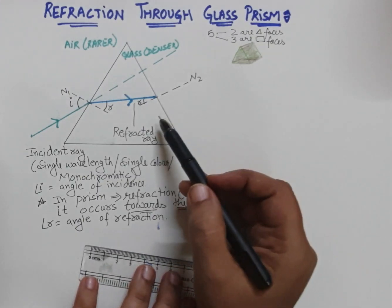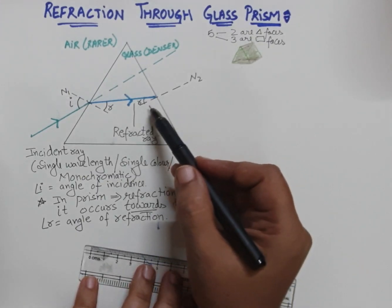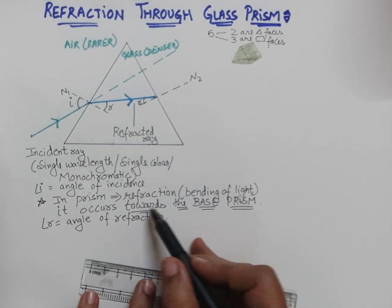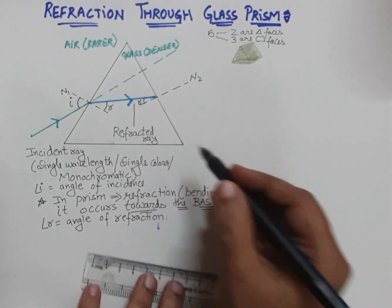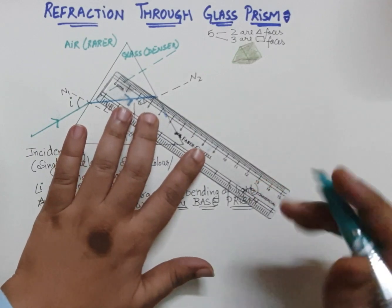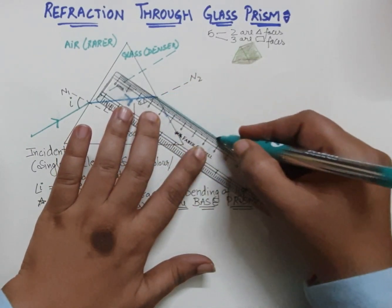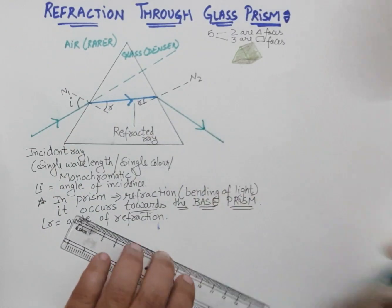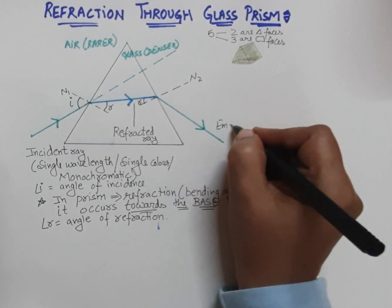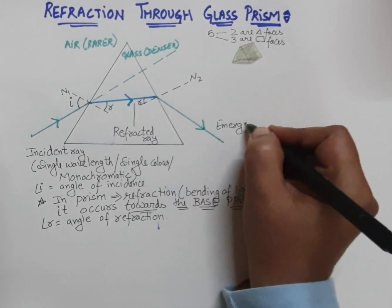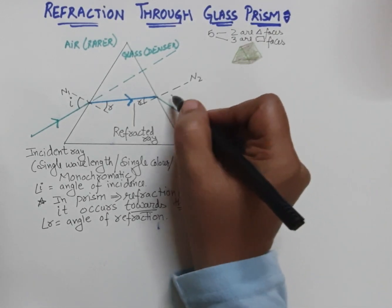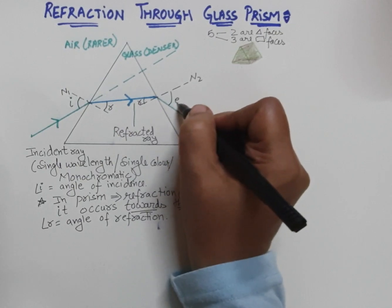Now the light is travelling from the denser medium to the rarer medium, so it will bend away from the normal. Or using the prism rule, it will always bend towards the base, which is downward. This is the last ray, and the ray which finally emerges out is known as the emergent ray. The angle between the emergent ray and the normal is called the angle of emergence.